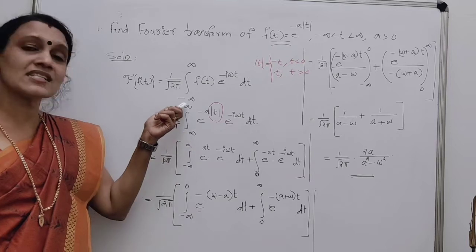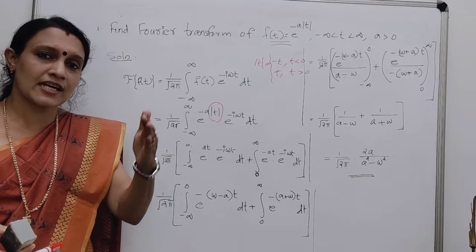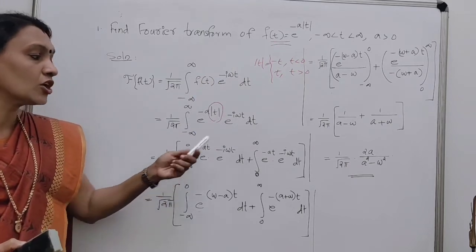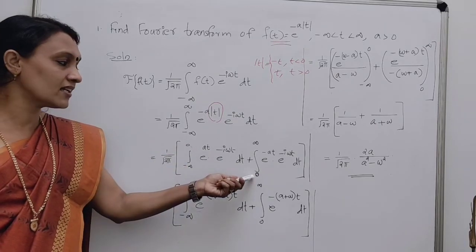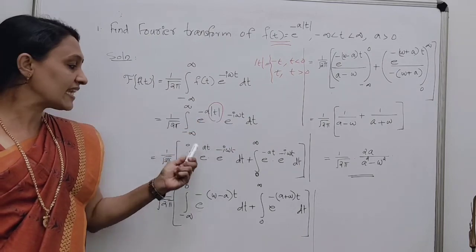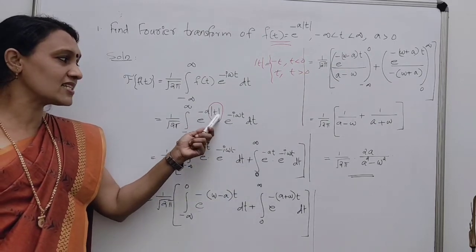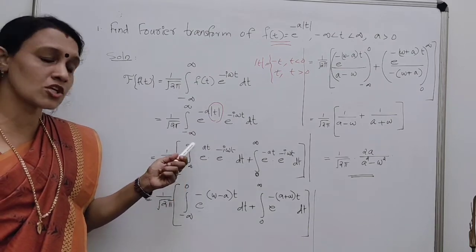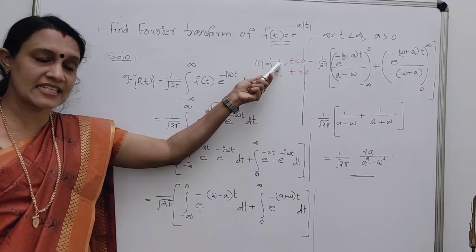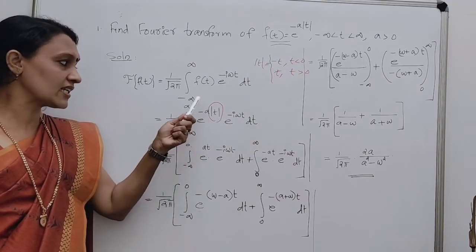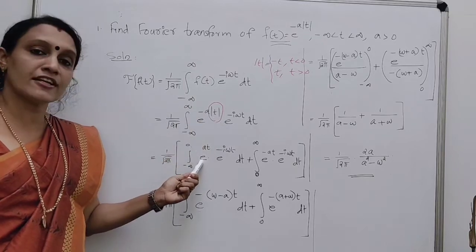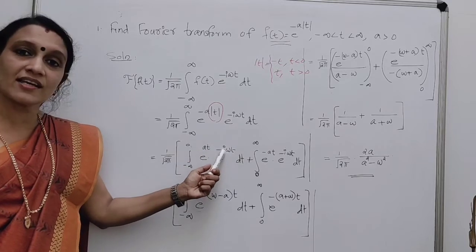The interval from minus infinity to infinity can be split: from minus infinity to 0, where t is less than 0, and from 0 to infinity. For the interval minus infinity to 0, |t| = -t, so we have minus a times minus t, which gives e^(at). Therefore the first integral becomes e^(at) × e^(-iωt) dt.